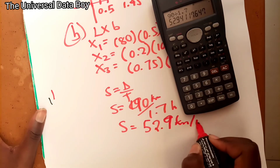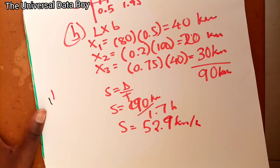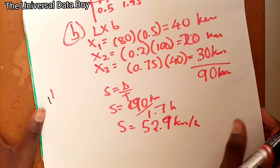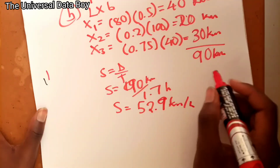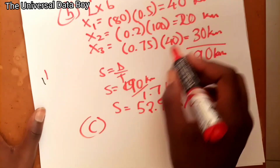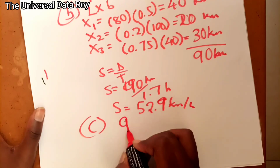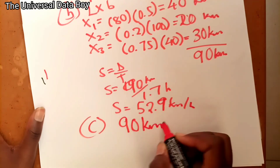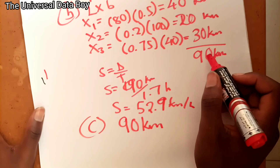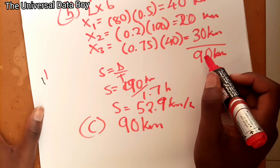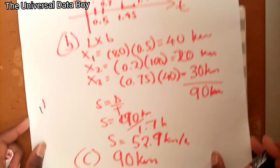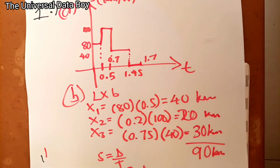For part (c), we need to determine the distance between the initial and final cities along the route — that is simply the total distance we already calculated, which is 90 kilometers. The initial city is where she started driving and the final city is where she stopped to eat lunch and buy gas. That's all for question one.